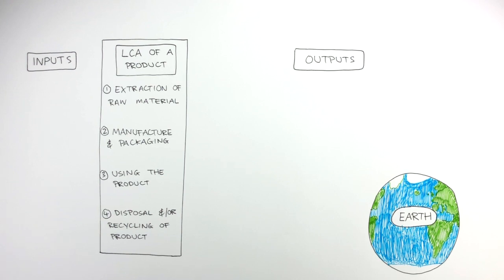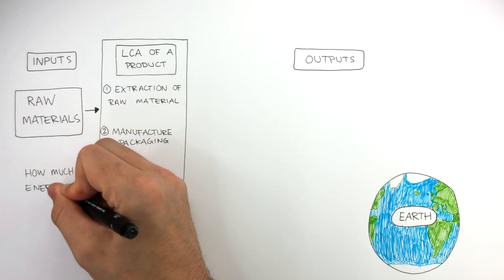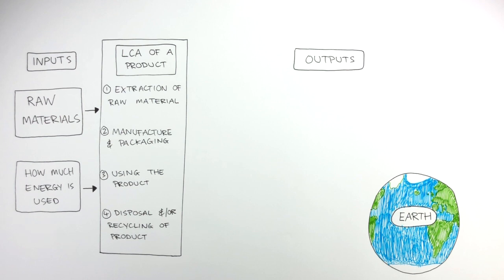So the inputs of any LCA are which raw materials are used and how much energy is used. This will be unique depending on what the product is.